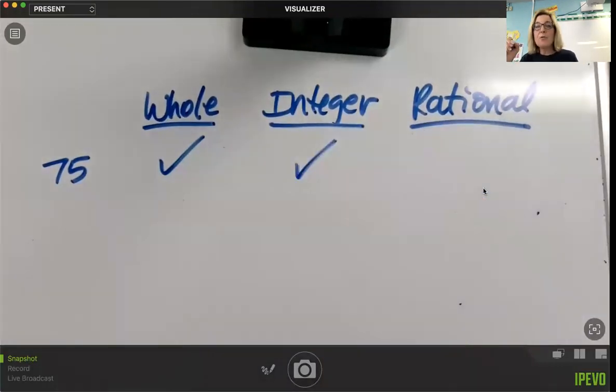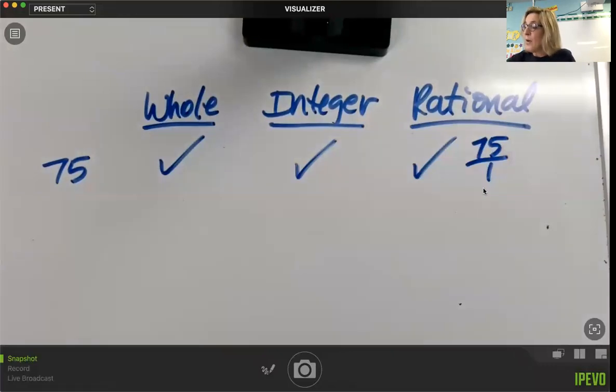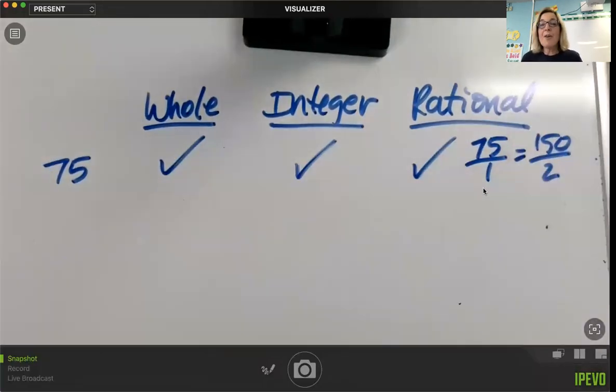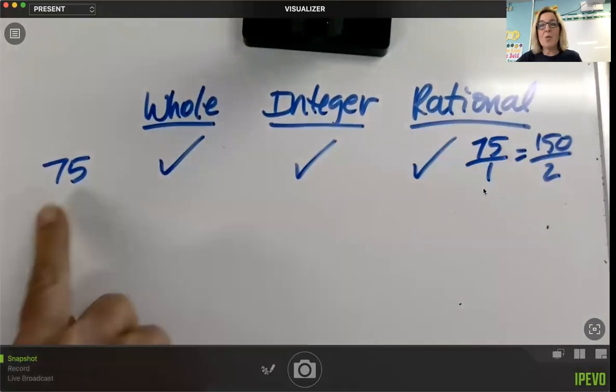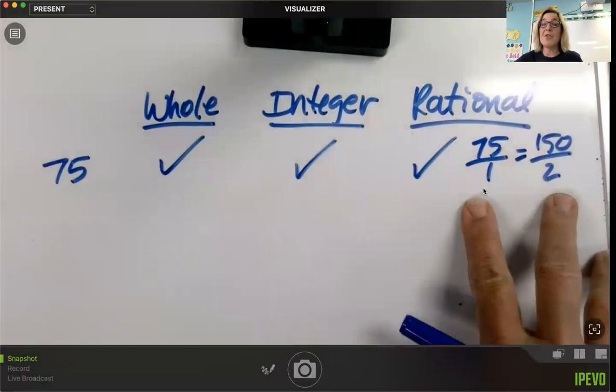And if you remember, that oval that you drew for whole numbers sat inside the integer oval. So that means all whole numbers are also considered integers. So then by that thinking, is 75 a rational number? Well, if a rational number by definition is any number that can be written as a fraction, 75 can be written as a fraction. It is a rational number because you could write 75 over one as a fraction. You could also write 150 divided by two has a value of 75. So even though this number 75 is written as a whole quantity, it can be written in fraction form. And these are two fractions with a value of 75. And that makes them whole numbers, integers, and rational numbers.